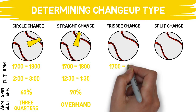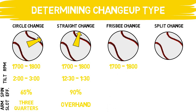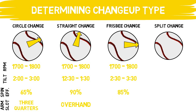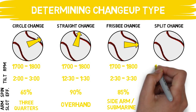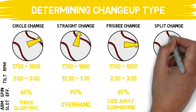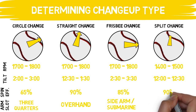The frisbee change is the opposite of the straight change — it comes in with about the same spin rate but a much lower tilt. The spin efficiency is around 85% or above, and it generates its unique movement profile mostly because of the athlete's arm slot. I've typically only seen this profile from guys who throw sidearm or submarine. Lastly, the split changeup is the only variant with a lower spin rate. Its spin efficiency is a high 90%, and I've seen just about any arm slot have success with it.